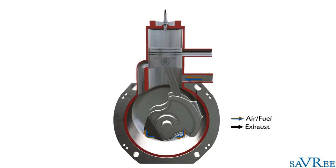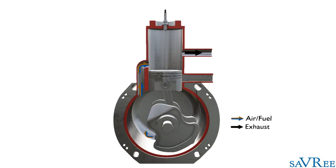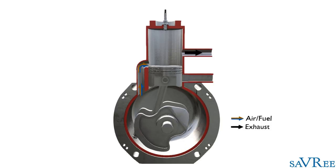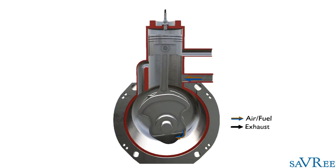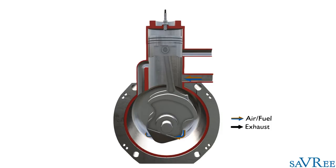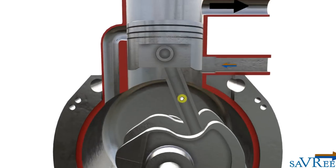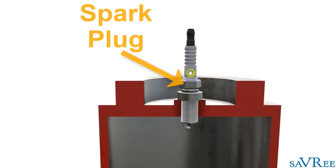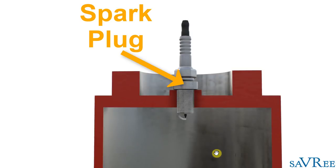So here we have our 3D model, much the same as before, although this time it's interactive. In order to do this video properly, I think the first thing we need to do is quickly go through some of the main components. Let's start at the top — we can see we have a spark plug. The spark plug is used for igniting the air-fuel mixture within the engine, which we're gonna get to in a moment.